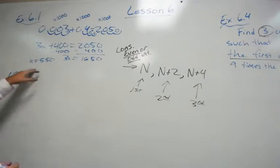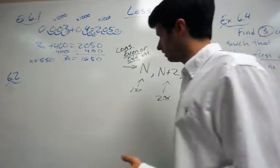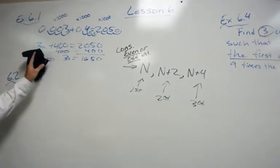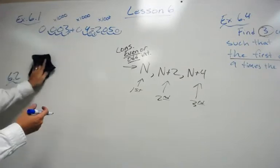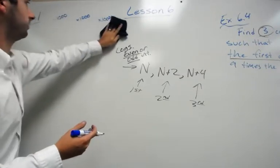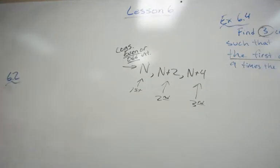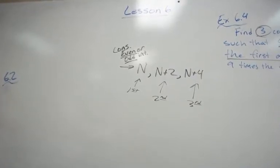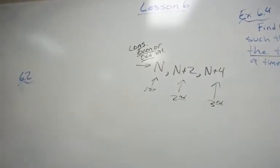So that's example one. When you see those decimal problems, you multiply by whatever you need in order to get rid of the decimals. Example 6.2 is a word problem. For these decimal word problems you can actually use a ratio box.